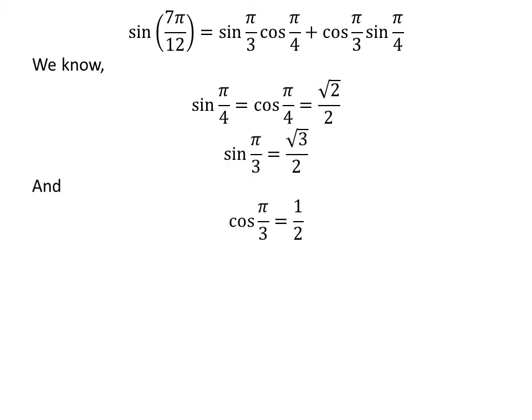We know sin of pi upon 4 is equal to square root of 2 upon 2, and cos of pi upon 4 is also equal to square root of 2 upon 2. We also know the value of sin of pi upon 3 is equal to square root of 3 upon 2, and cos of pi upon 3 is equal to one half.